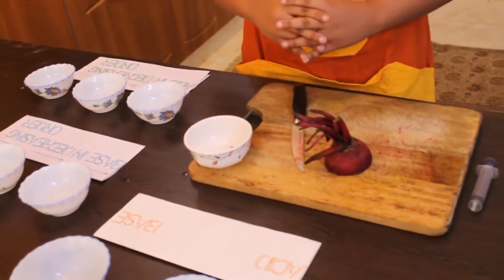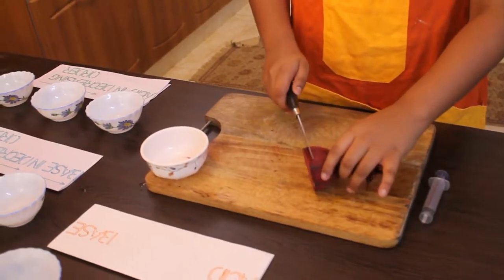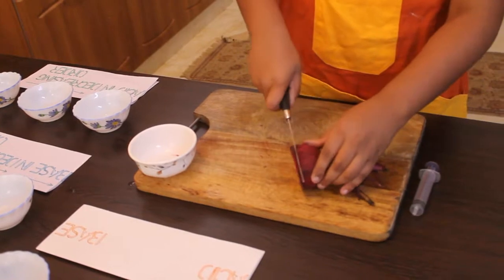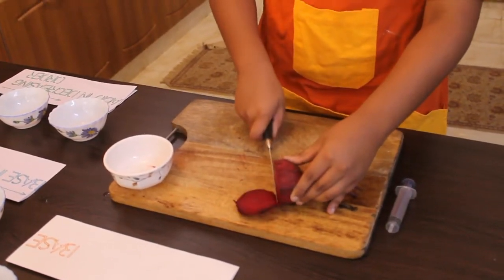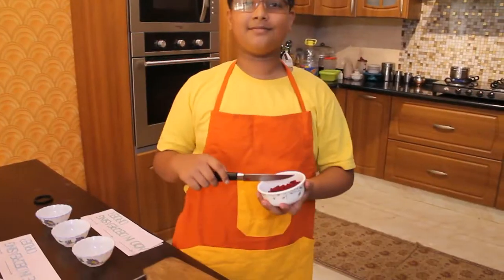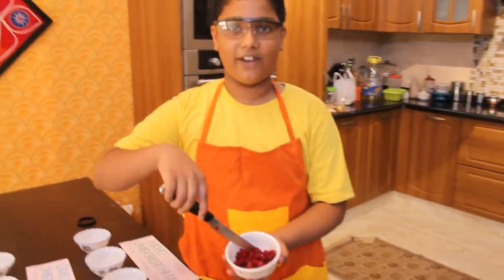First we shall start by cutting the beetroot into small thin pieces. Now the beetroots are cut into small fine cubes.